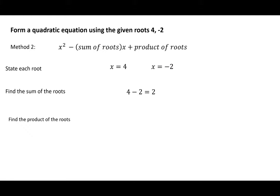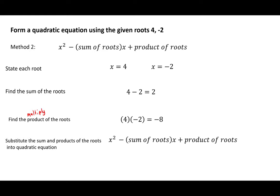We then find the product of the roots, which means we multiply the roots together. This gives us 4 times minus 2, which equals minus 8. We then substitute the sum and product of the roots into the quadratic equation formula: x squared minus the sum of the roots times x plus the product of the roots gives us x squared minus 2x plus minus 8.